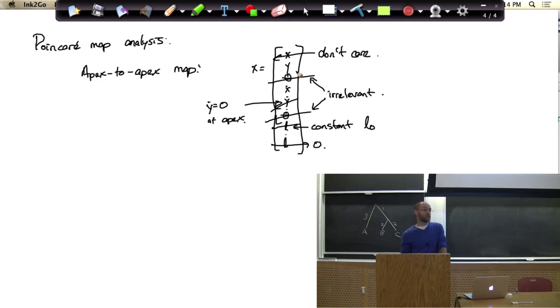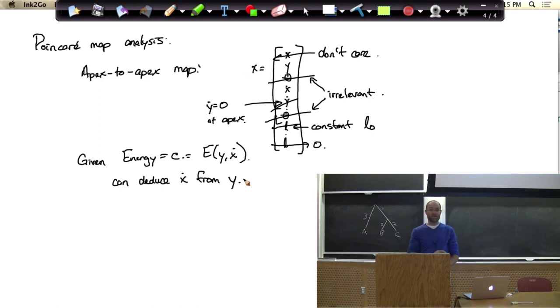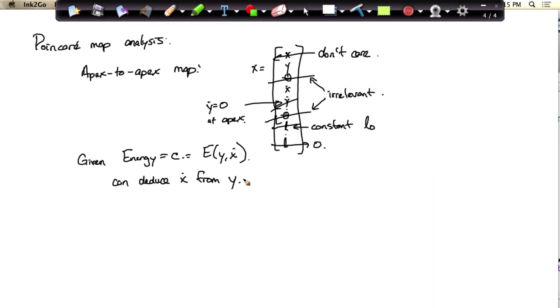We don't really need to include that in our map. If I tell you I'm at the apex, I already know what L is. So I can infer that from the other variables. X doesn't really, I don't really care where I am in the world right now. I don't expect to be stable in that variable anyway. Y dot, the apex is defined by the place where y dot equals zero. So I can get rid of that one too. And suddenly I'm just left with y and x dot. If I know y and x dot, I can infer what the other state variables must be. So I can write my dynamics as a function of y and x dot and get to the next one.